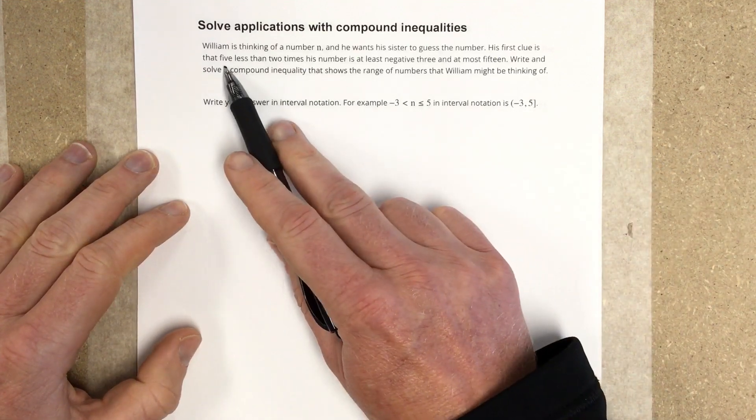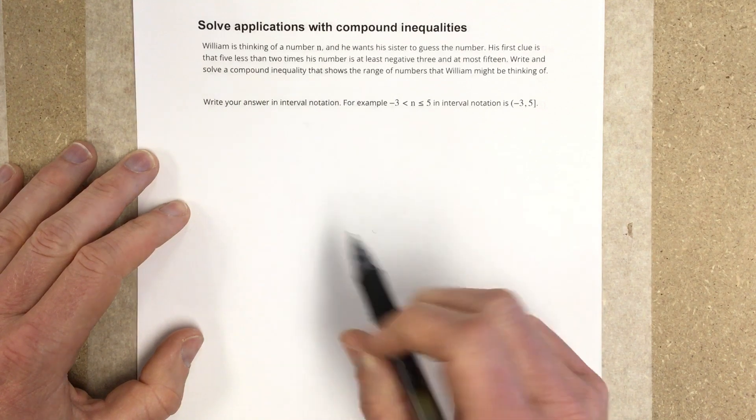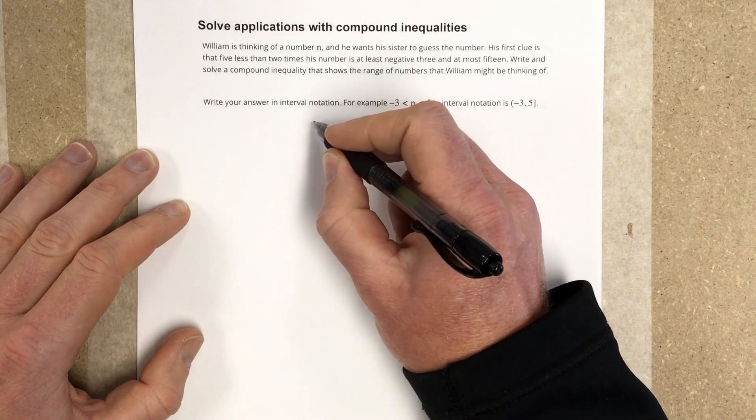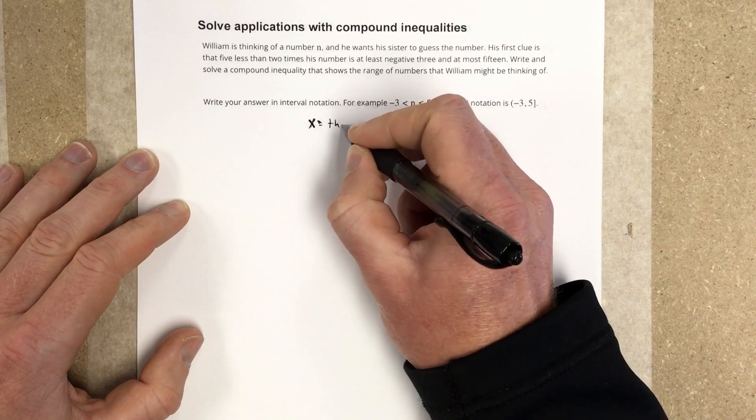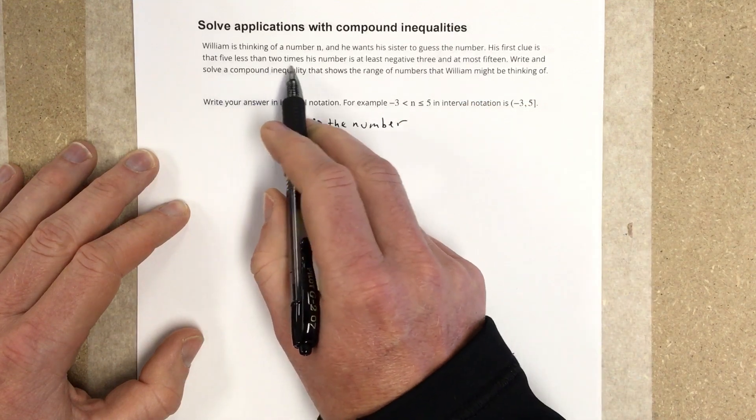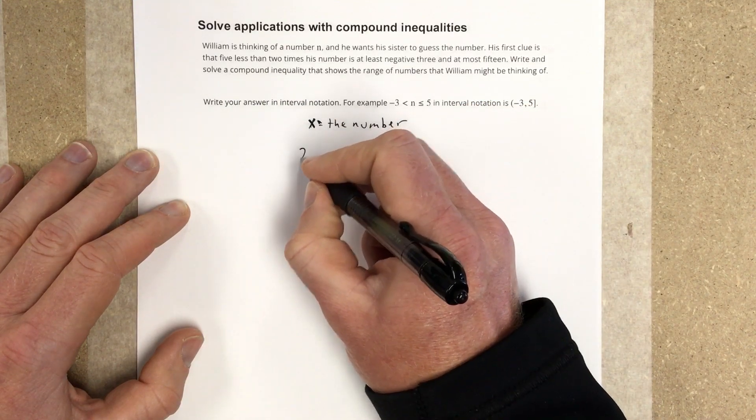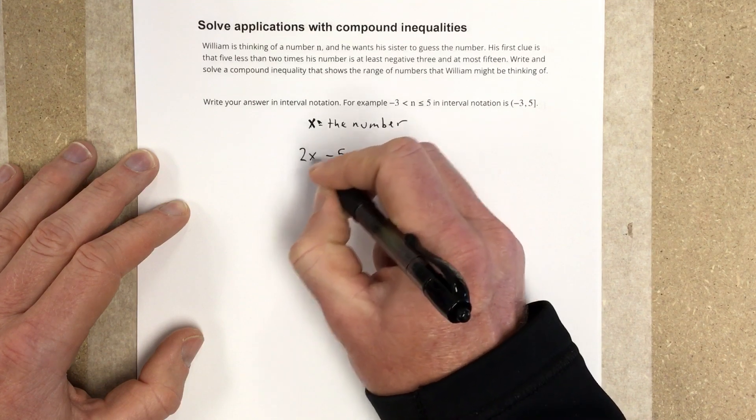So it says that his first clue is 5 less than 2 times his number. I'm going to say that x equals the number, so 5 less than 2 times his number would be 2 times his number minus 5. That's 2x - 5.